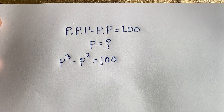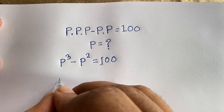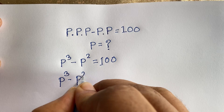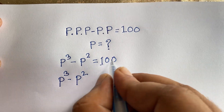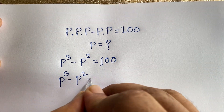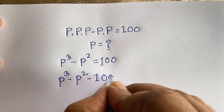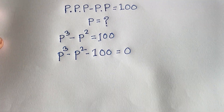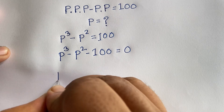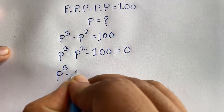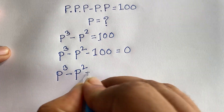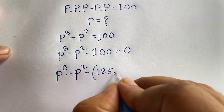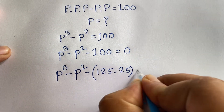Now, at this moment, I can say that this equation becomes P to the power 3 minus P squared, and if I move this 100 to this side, it will be negative 100, equal to 0. This expression will be P to the power 3 minus P squared minus 100, and we know that 100 equals 125 minus 25, so that is equal to 0.